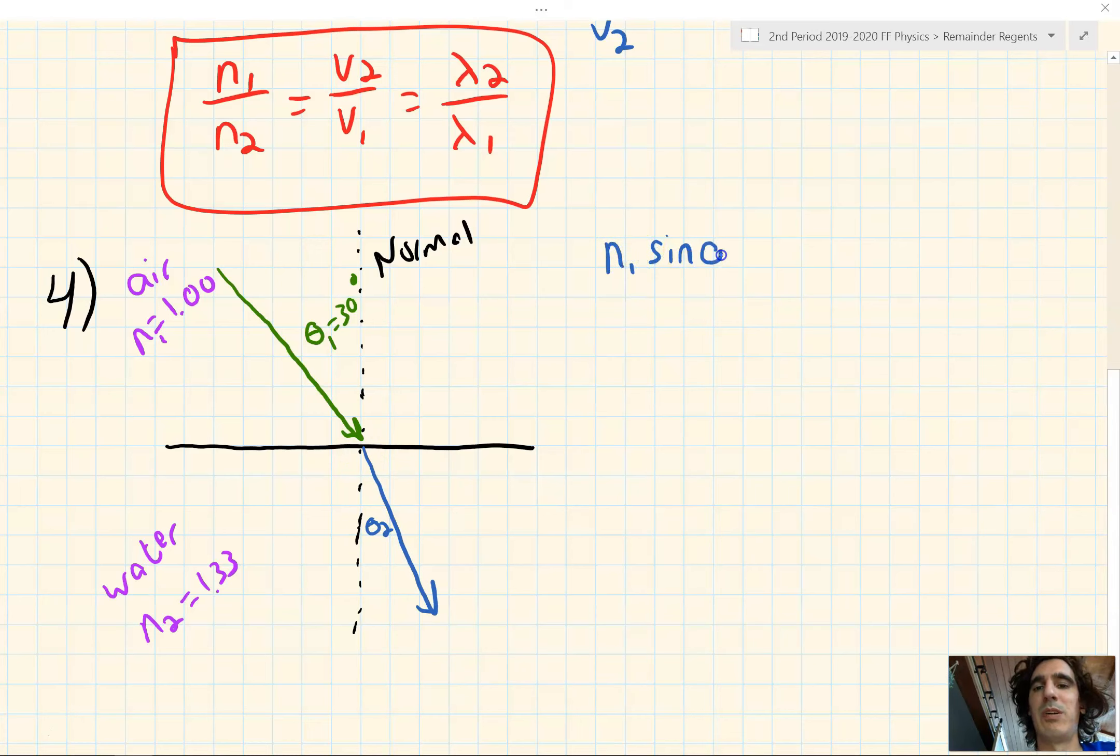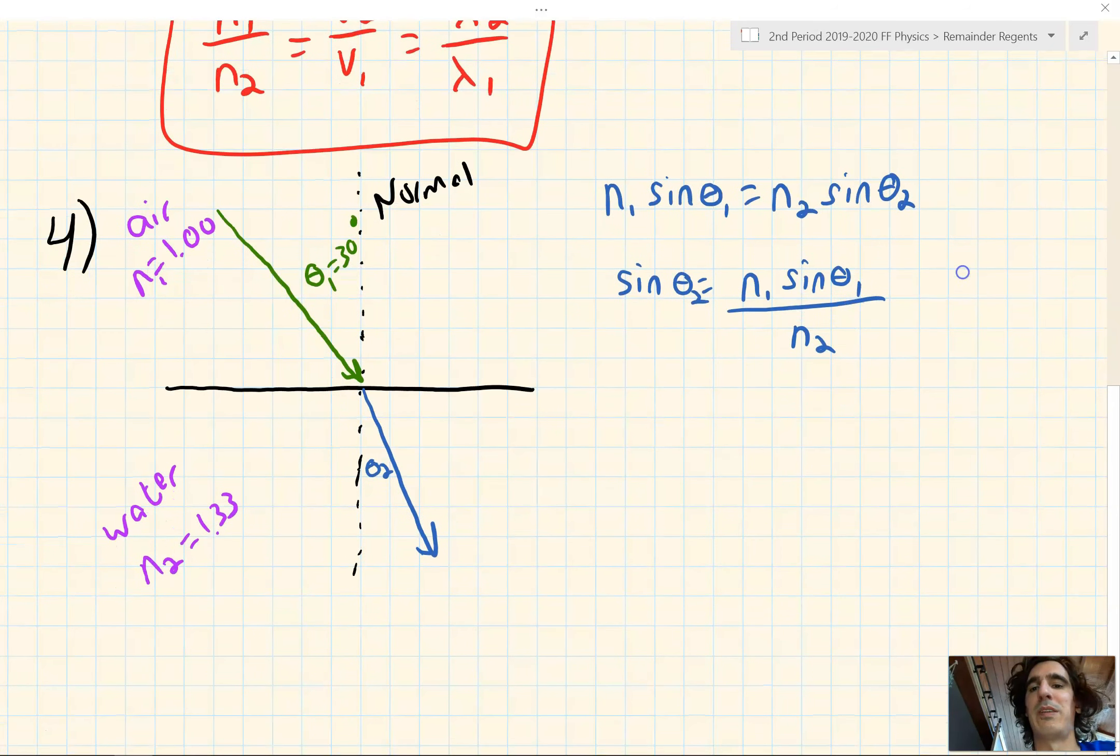n₁ sin θ₁ equals n₂ sin θ₂. And we want to solve for θ₂. So we'll divide both sides by n₂. So we have sin of θ₂ equals n₁ sin θ₁ all over n₂. To find θ₂, we have to take the inverse sine, or second sine in our calculators. So θ₂ is the inverse sine, sin to the negative 1, of everything on the right side. n₁ sin θ₁ all over n₂.